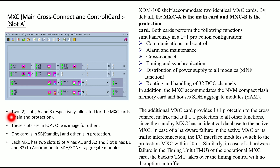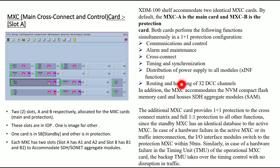Each MXC has slots B1 and B2. The XTM-100 shelf accommodates two identical MXC cards. By default, MXC-A is the main card and MXC-B is the protection card. Both cards perform their functions simultaneously in a 1+1 protection configuration.